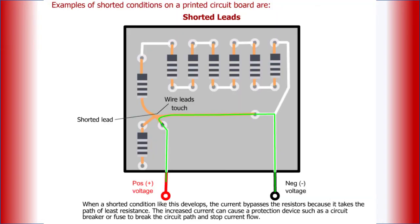When a shorted condition like this develops, the current bypasses the resistors because it takes the path of least resistance. The increased current can cause a protection device, such as a circuit breaker or fuse, to break the circuit path and stop current flow.